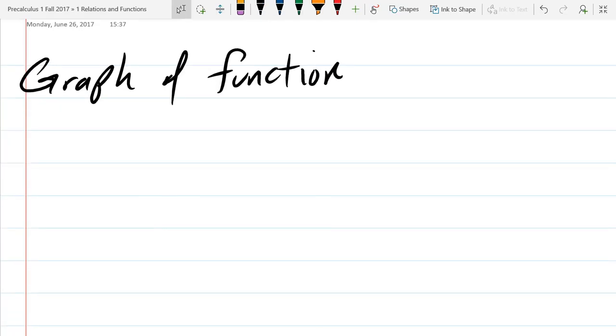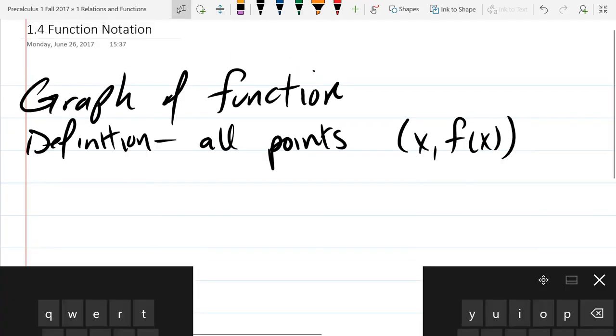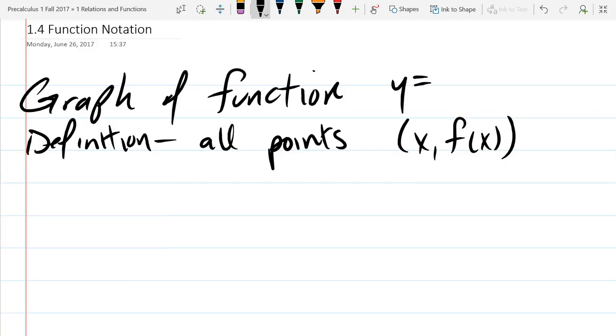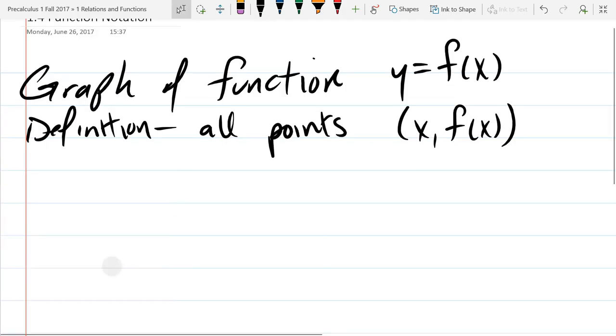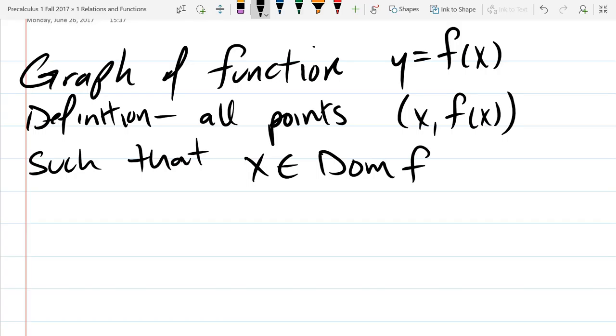So we'll look at graph of function. So what is a graph of a function? It's going to be all points. The points are going to be an x-coordinate and a y-coordinate, and the y-coordinate is going to be known as f(x). And this is when we get our function in the form y equals f(x). So the graph is all points (x, f(x)) such that the x's are in the domain of f.